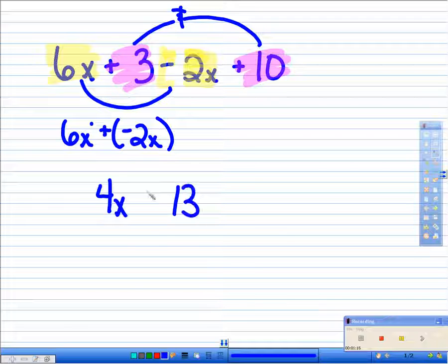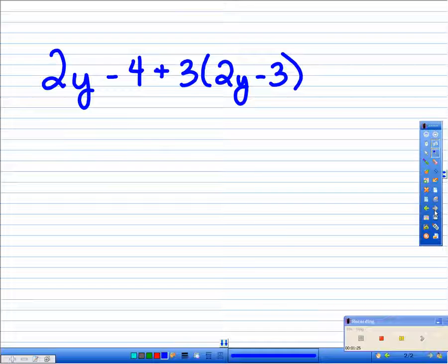And we're always going to combine things. So 4x plus 13 is the simplified version of the expression you see up top. Let's take a different problem.